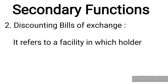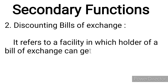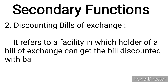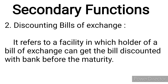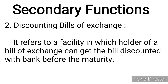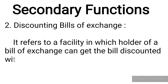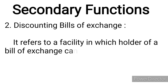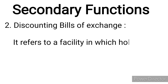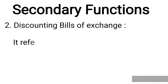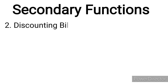The second secondary function is discounting bills of exchange. This refers to a facility in which the holder of a bill of exchange can get the bill discounted with the bank before maturity. For example, if two parties have agreed on payment in three months via a bill of exchange but one party needs funds earlier, the bank discounts the bill and collects from the other party at maturity.